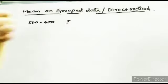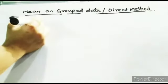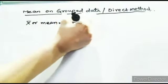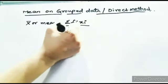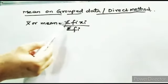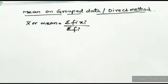You must compulsorily find out the mid values. The formula for finding the mean on grouped data is: x̄ (mean) equals summation of fi·xi divided by summation of fi. Here fi means frequency — there can be unlimited data: 3, 4, 5, 6, and so on. So the direct method formula is: mean = Σfi·xi / Σfi.